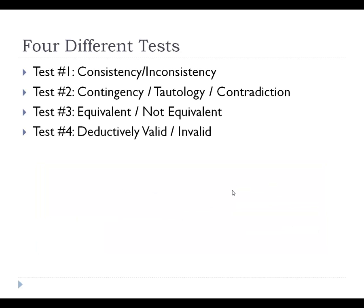There are four basic tests for truth trees. There's a test to see if a set of propositions is consistent or inconsistent, whether or not a proposition is contingent, tautological, or a contradiction. There's a test to see whether or not a pair of propositions are equivalent. And finally, there's a test to see if an argument is valid or invalid.